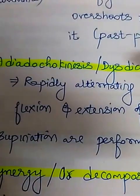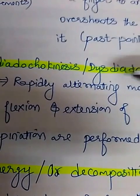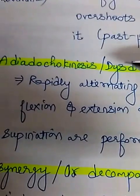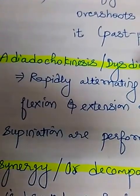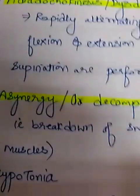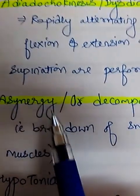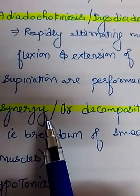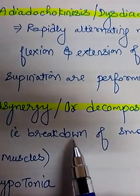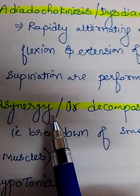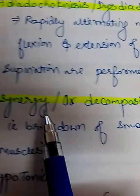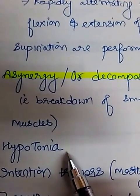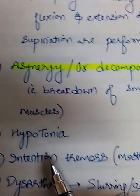Third is dysdiadochokinesis. Normally we can do rapidly alternating movements like flexion, extension, pronation, and supination, but these patients perform this in a very clumsy manner. Fourth, asynergia occurs — this is the breakdown of smooth coordination between muscles performing a function. The cerebellum is important for synchronization and coordination of movements, but if it is injured, asynergia occurs. Hypotonia can also occur because the cerebellum is responsible to some extent for muscle tone.